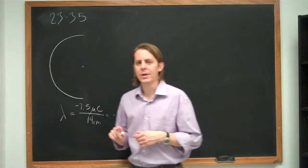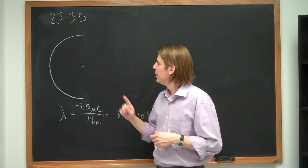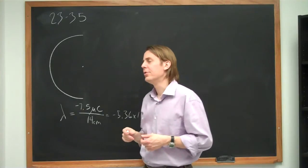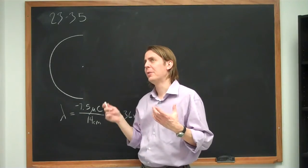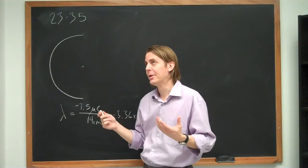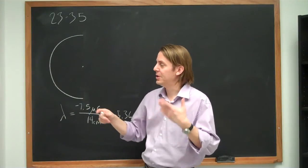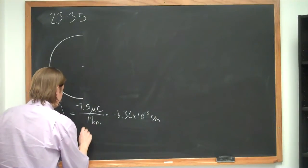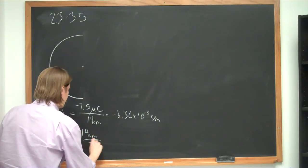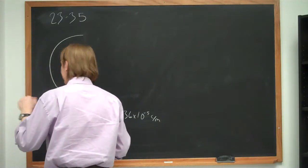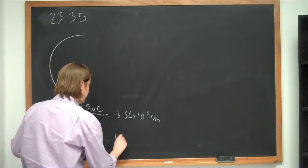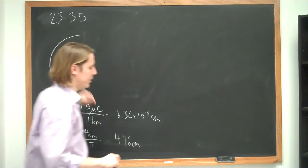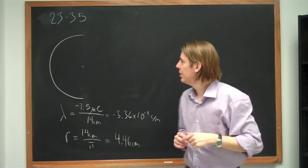Another thing we know is the radius of the circle. Half the circumference is 14 centimeters, and half the circumference equals pi times half the diameter, so the radius equals 14 centimeters divided by pi, which gives 4.46 centimeters. The radius tells us how far all the charges are from the point we're interested in.